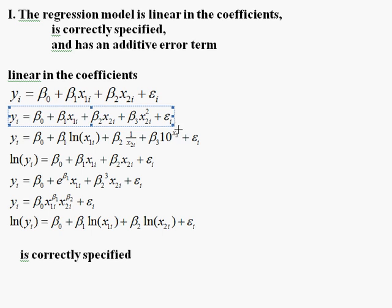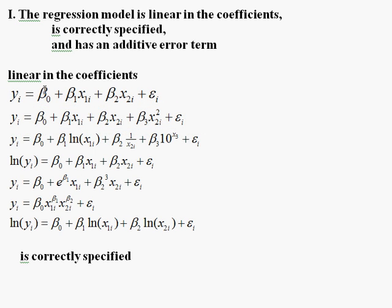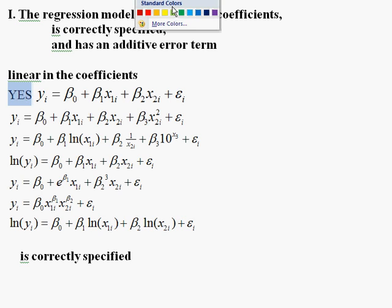This first one is the typical linear in the coefficients model, but there are some other options also. The second equation: y equals a y-intercept, a slope times x, a slope times another x. But then we have another slope here, b3 times the variable, the second explanatory variable squared. Is this linear in the coefficients? Yes it is.